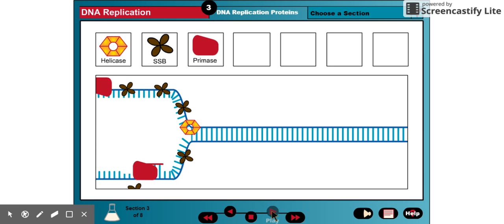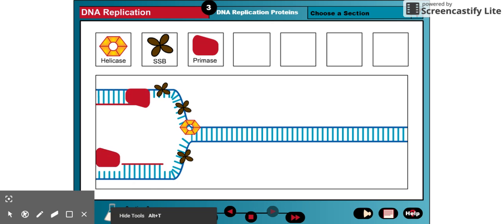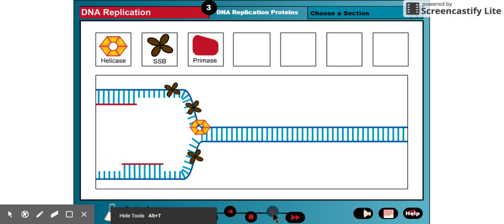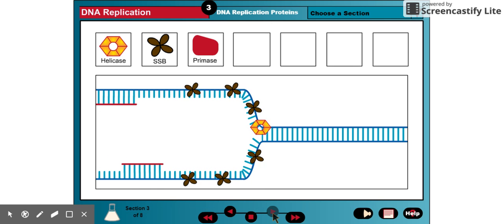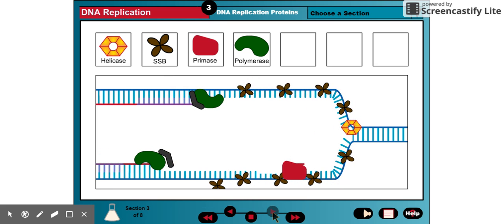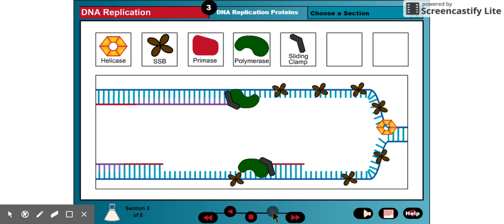Primase is an RNA polymerase that synthesizes the short RNA primers needed to start the strand replication process. DNA polymerase is a hand-shaped enzyme that strings nucleotides together to form a DNA strand. The sliding clamp is an accessory protein that helps hold the DNA polymerase onto the DNA strand during replication.